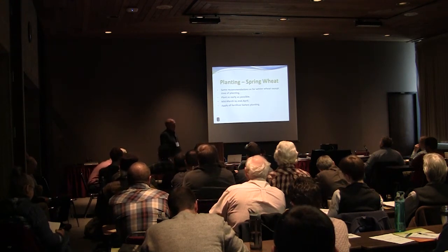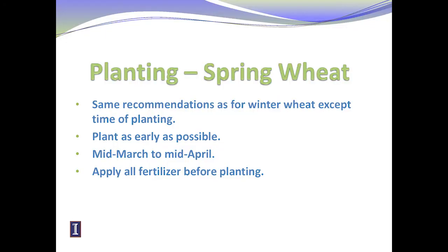For spring wheat, most of the same things apply. The difference is that with spring wheat, as with spring oats, you should plant as early as possible - mid-March to mid-April. If I don't have my oats or spring wheat planted by mid-April, I'm getting pretty nervous, because then you get caught on the other end with hot weather that shuts down the plants and reduces yield. You can get short periods of high temperature spikes that are detrimental to the crop. You want to apply all your fertilizer before planting.